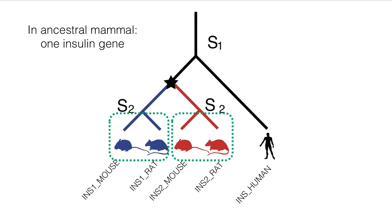You can see that it's really important to define the clade — that is, the taxonomic level — for which the HOGs are defined. By contrast, at the rodent taxonomic level, insulin 1 in mouse and insulin 2 in rat are out-paralogs. This is because they started diverging at a duplication that happened before the rodent speciation. Therefore, they are in different HOGs relative to this level.